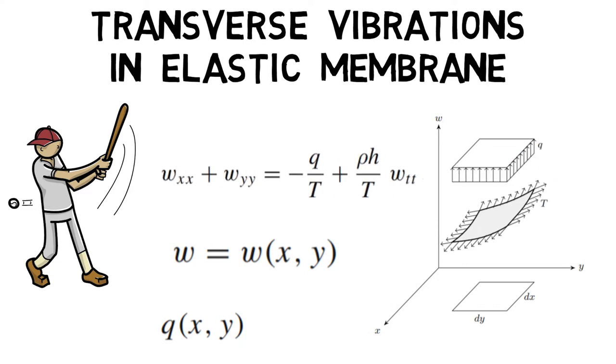The transverse vibrations of a tensed membrane are given by solving the PDE equation WXX plus WYY equals minus Q upon T plus rho H upon T into WTT. Here, H is the thickness of the membrane.